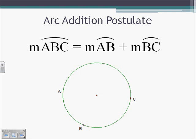The arc addition postulate is very similar to the segment addition postulate. Any arc can be broken down into the sum of its component parts. So arc ABC is going to be equal to the measure of arc AB plus the measure of arc BC.